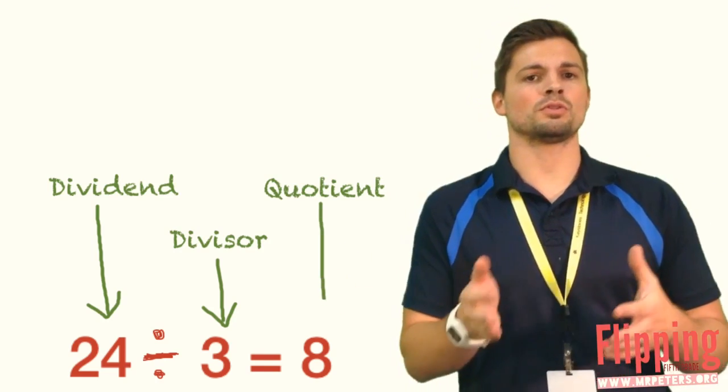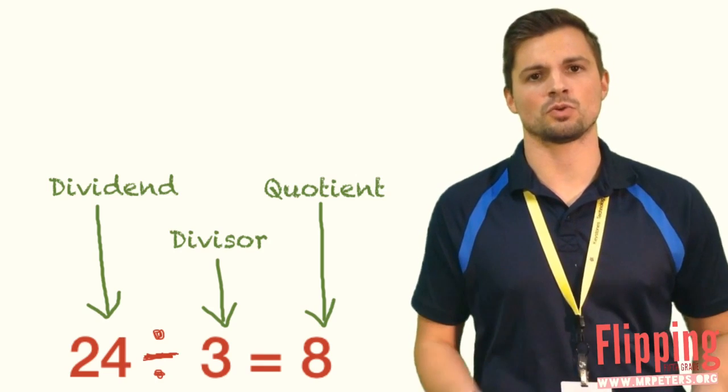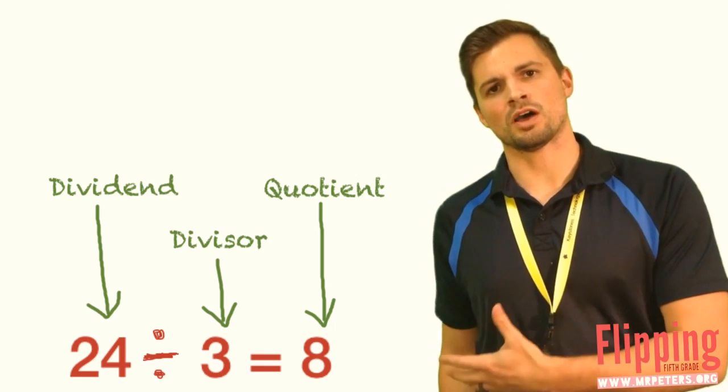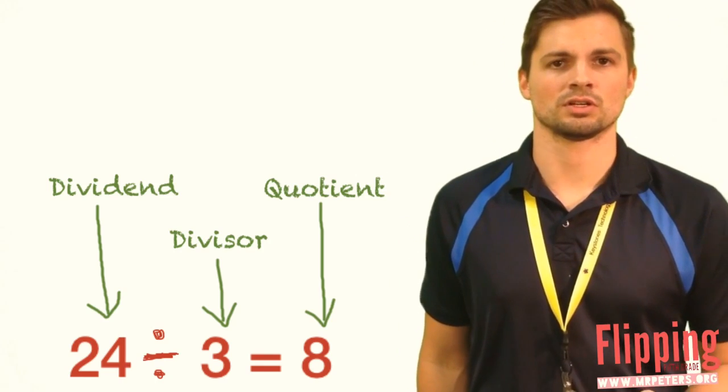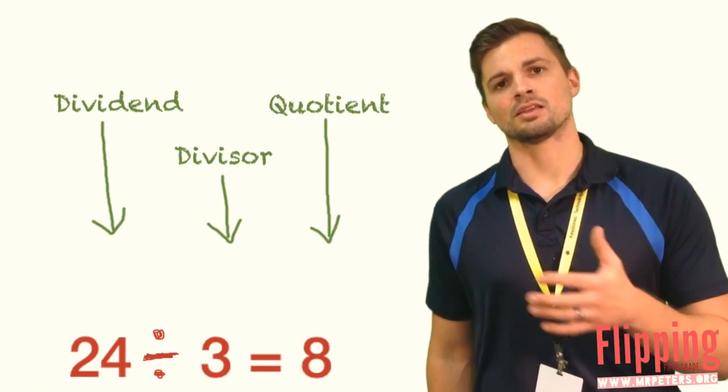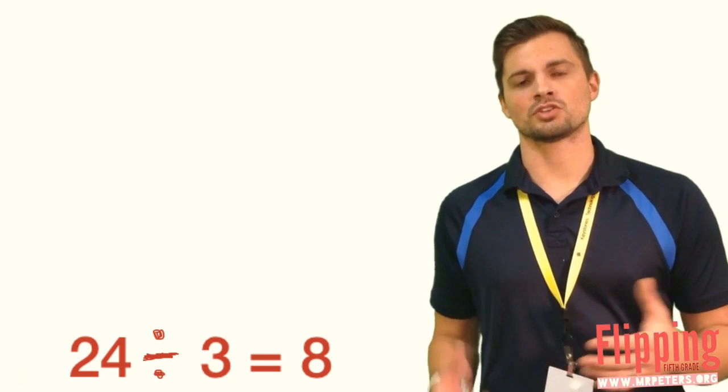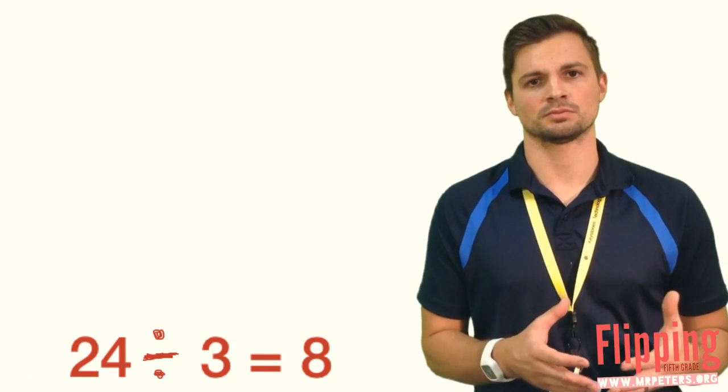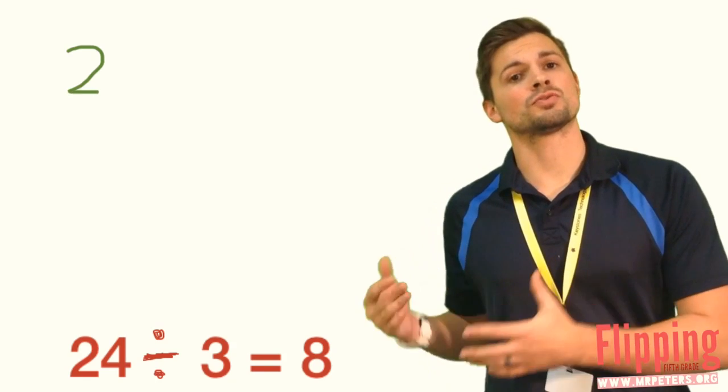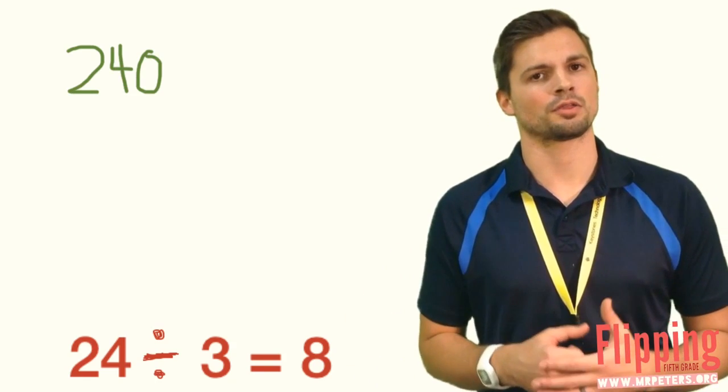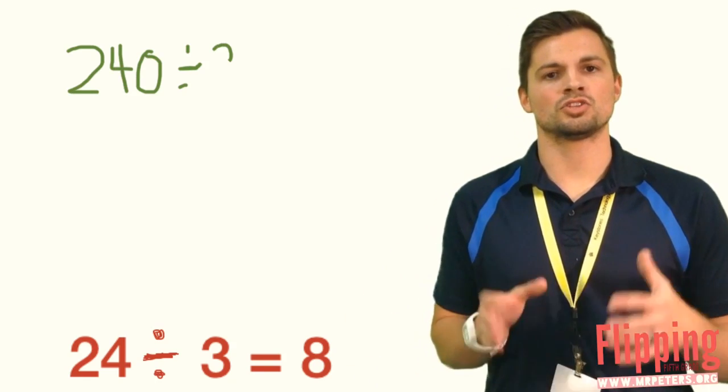If we know our multiplication facts, we can ask the question: 3 times what will give me 24? In this case, we know that 8 is that answer. Now 8, being the quotient, is our basic fact. Now we're going to expand that. We're going to say 240 divided by 3.